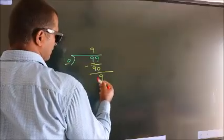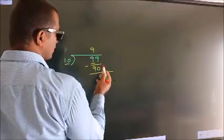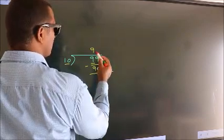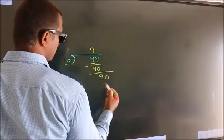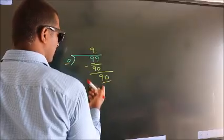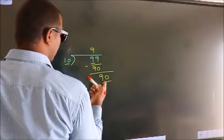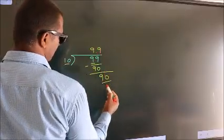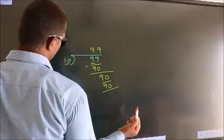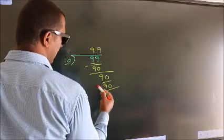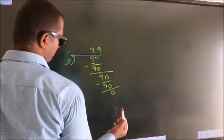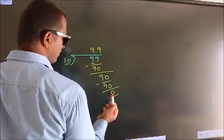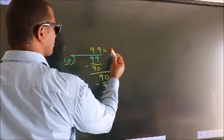After this, there are no more numbers to bring down. So what we do is put a dot and take 0, making it 90. When do we get 90 in the 10 times table? 10 nines is 90. Now we subtract and we get 0. Here we got remainder 0, so this is our quotient.